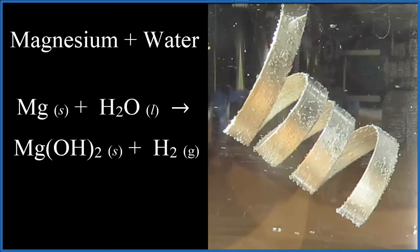But we still see those hydrogen bubbles coming off. So a reaction is taking place. We should balance the equation. Let's put a 2 in front of the H2O, and that'll balance the equation.